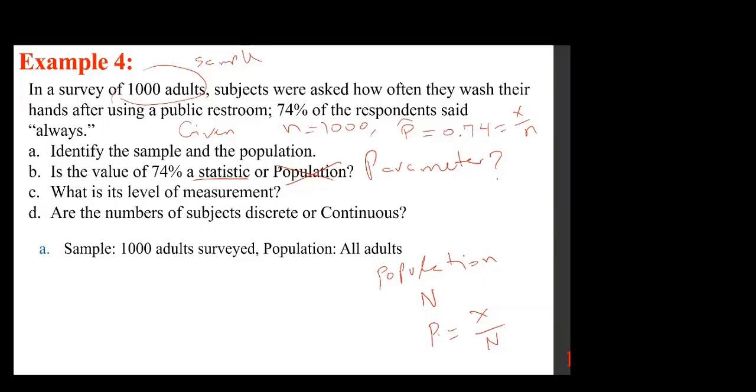The level of measurement. Remember what's happening? 74% of the respondents said always. This is what? Nominal. Nominal. No. No, no, no, no. I'm sorry. It's the highest one. It's the ratio. And the numbers. Discrete or continuous? Discrete. Statistic. Ratio. Discrete.